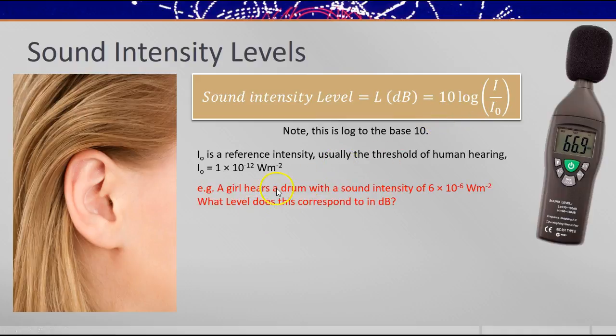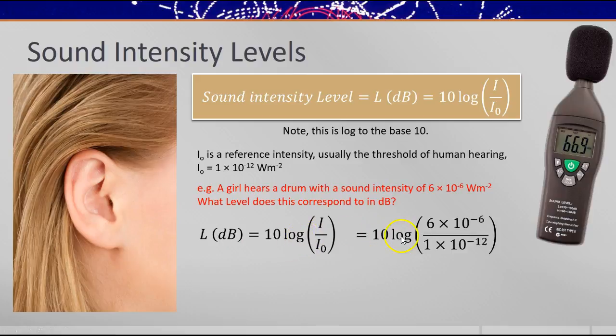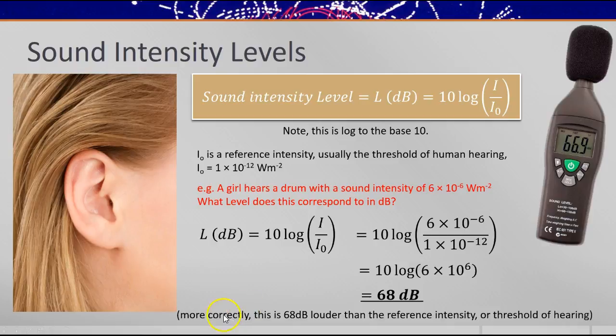So for example, a girl hears a drum with a sound intensity of 6 × 10⁻⁶. What level does this correspond to in decibels? So applying the formula, we've got 10 log 6 × 10⁻⁶ over 1 × 10⁻¹². Evaluate that number. Take the log to base 10 and multiply by 10, and you get 68 decibels. And of course, that really means 68 decibels louder than the quietest sound she could hear.